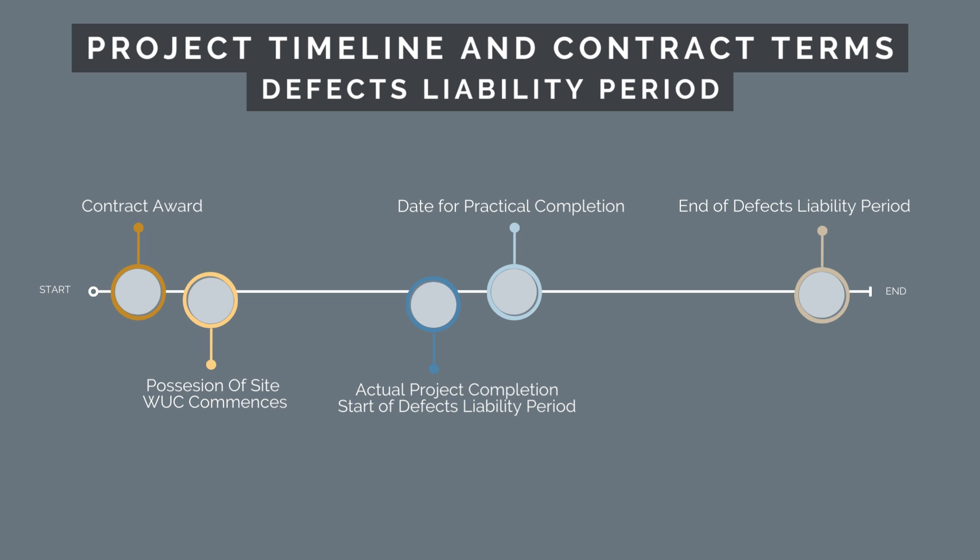The defects liability period will end when the time period written into the contract expires. So if the DLP was two years in the contract, the DLP will finish two years after the actual date of project completion.